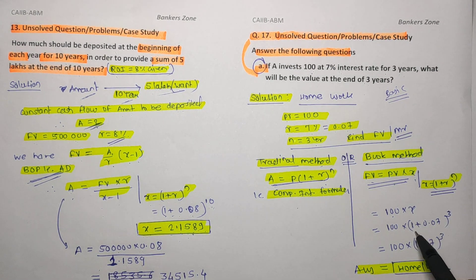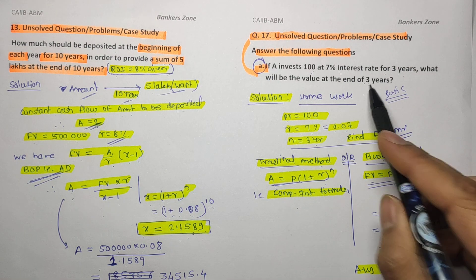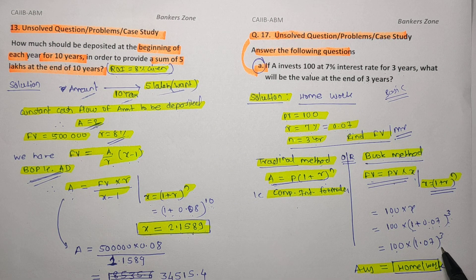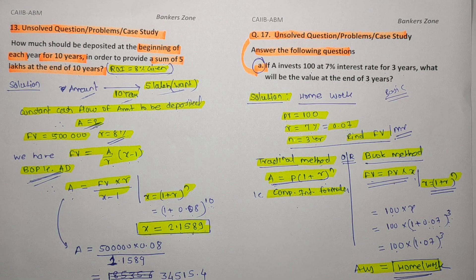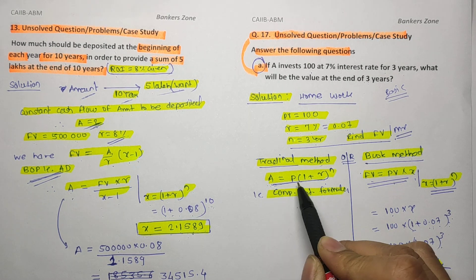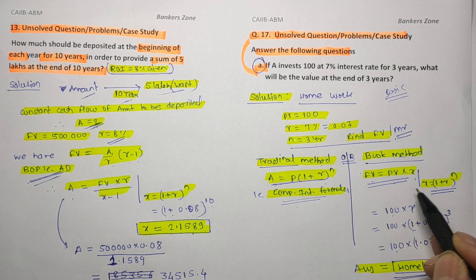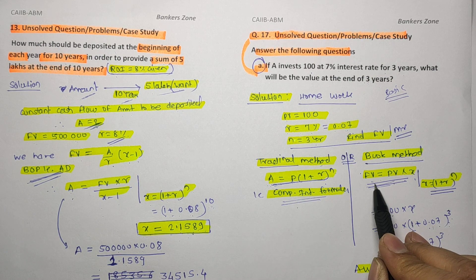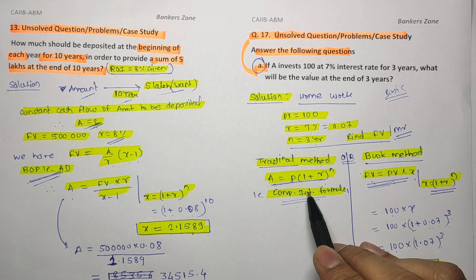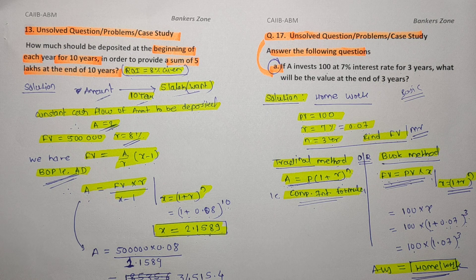x = (1 + 0.07)^3. Solve this and comment your answer in the comment box. There is also the traditional method: S = P × (1 + r)^n, where r is the rate of interest. Both formulas are the same — just rearranged. Previously you studied simple interest; now in banking you deal with present value and future value. In this way we have studied three unsolved numericals and will continue in the next session.